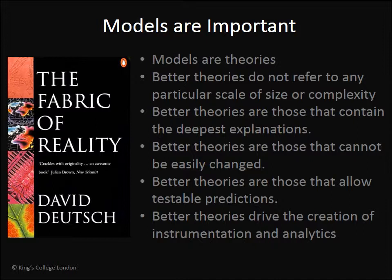The only way we can do this is by building models. Models really are theories. These theories have great explanatory power, and they can link seemingly disparate observations obtained at different scales with qualitatively different instrumentations in disparate experimental conditions and patient populations. Models also allow us to make testable predictions. Models are the most important products of scientific efforts, and they are key to determining the experiments, the technologies, and also the analytics. This slide shows a very good book from David Deutsch on the topic.